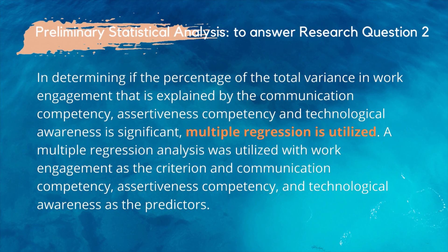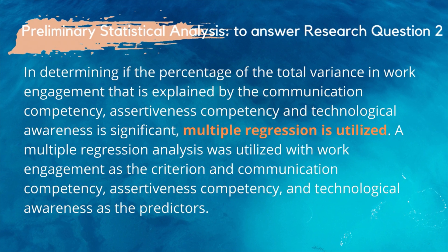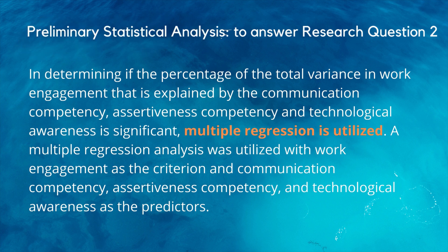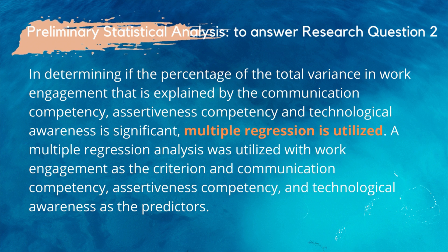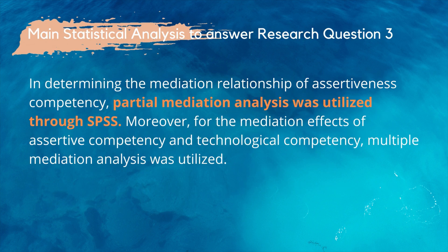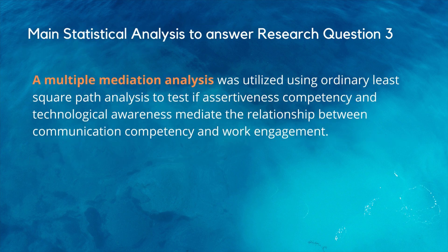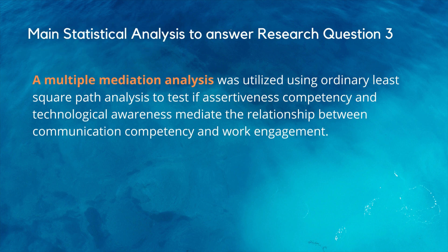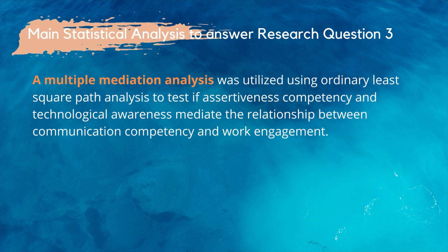Next, to answer research question 2, in determining if the percentage of total variance of work engagement explained by communication competency, assertiveness competency, and technological competency is significant, multiple regression is utilized. A multiple regression analysis was used with work engagement as the criterion and the three factors as the predictors. Last, to answer research question 3, in determining the mediation relationship of assertiveness competency, partial mediation analysis was utilized through SPSS. Also, a multiple mediation analysis was utilized using ordinary least square path analysis to test if assertiveness competency and technological awareness mediate the relationship between communication competency and work engagement.